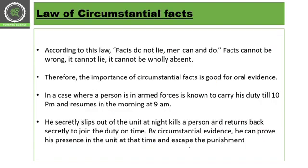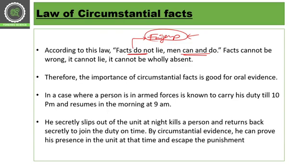Then we have the law of circumstantial facts — really very important. According to this law, facts do not lie, but man can. For example, if we have a fingerprint from the crime scene and it is my fingerprint, I cannot deny it — it is a fact that my fingerprint is present at the crime scene and I am somehow related to it. I can lie, but facts do not lie. Evidences never lie. If all the evidences are against me, I cannot escape. Facts cannot be wrong, cannot lie, cannot be wholly absent. Therefore, the importance of circumstantial facts and evidence as good evidence is established.